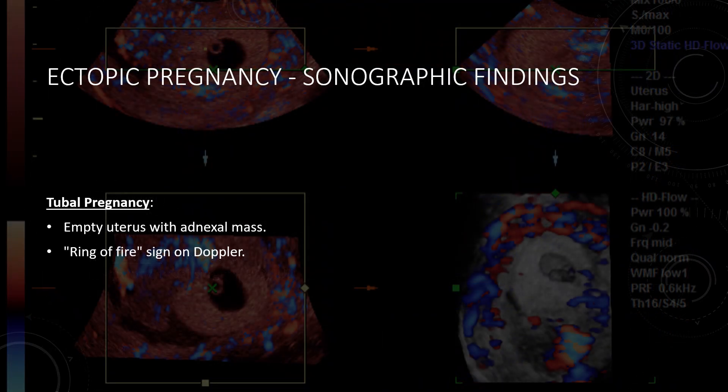On ultrasound, a tubal ectopic pregnancy often shows an empty uterus along with an adnexal mass. Color Doppler may reveal the classic ring of fire — increased vascularity surrounding the ectopic sac. Remember, the absence of an intrauterine pregnancy in the setting of a positive pregnancy test should always raise suspicion for ectopic pregnancy.